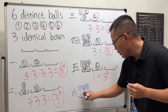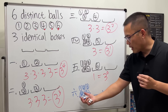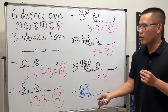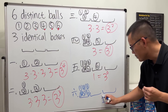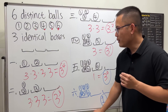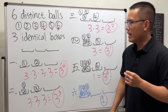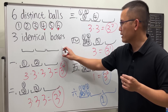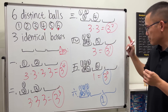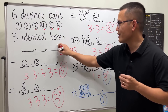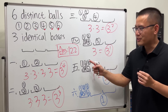There is one more case: all six balls in one box. Since all the boxes are identical, putting all six balls in any one box is the same, so we add one more. Finally, we add all cases together: 81 plus 27 plus 9 plus 3 plus 1 plus 1. The final answer is 122. This is such a nice question and such a beautiful solution.